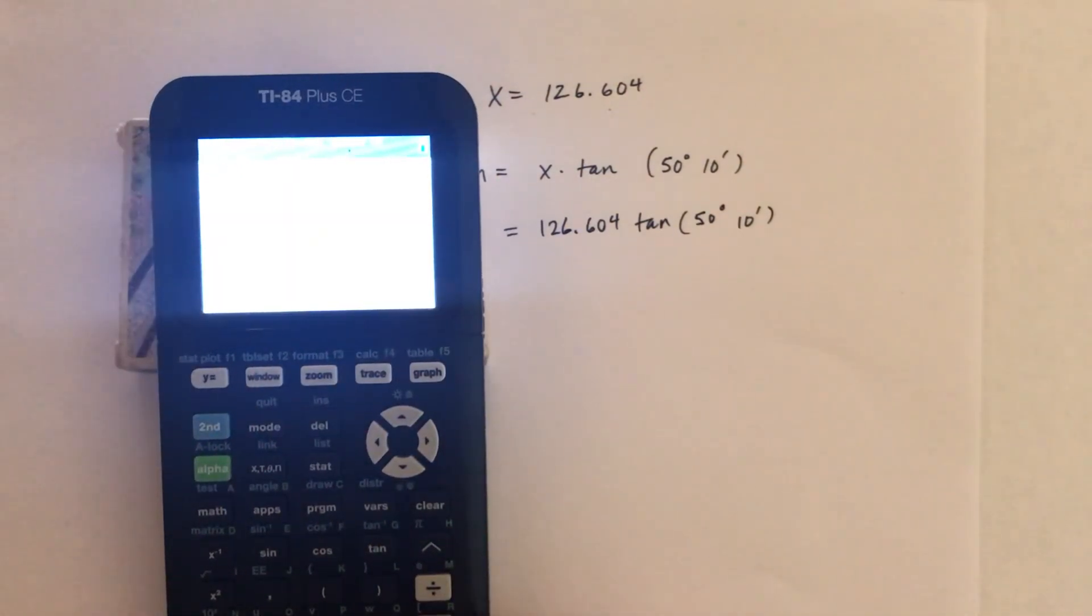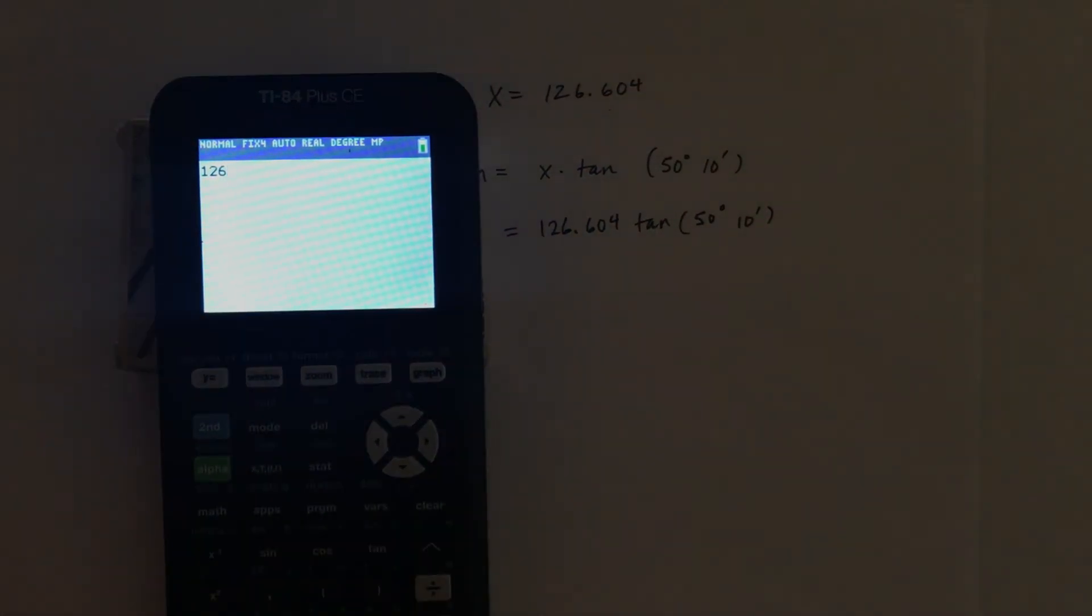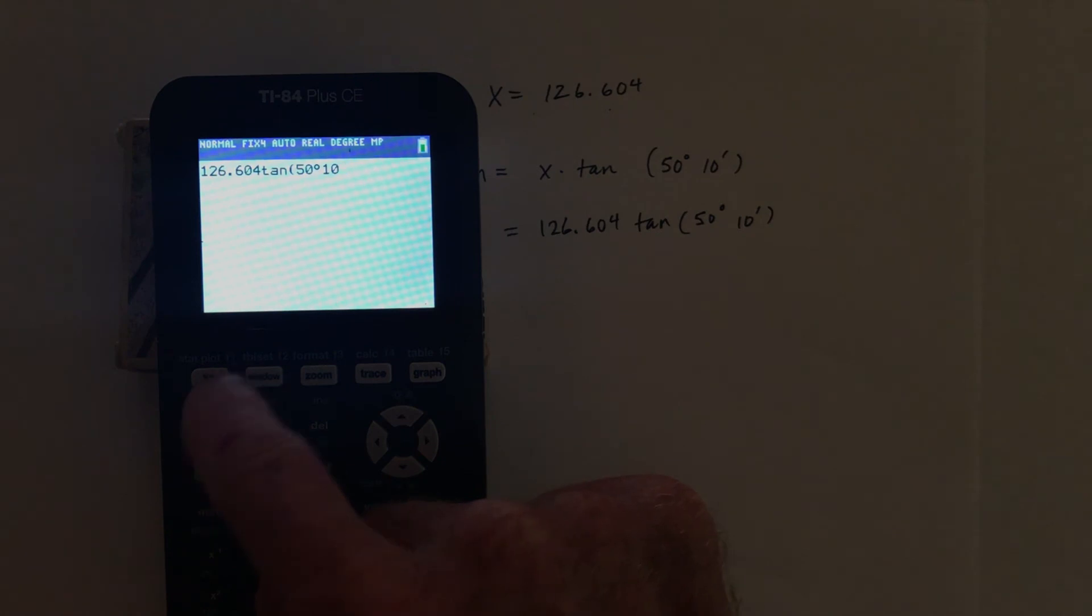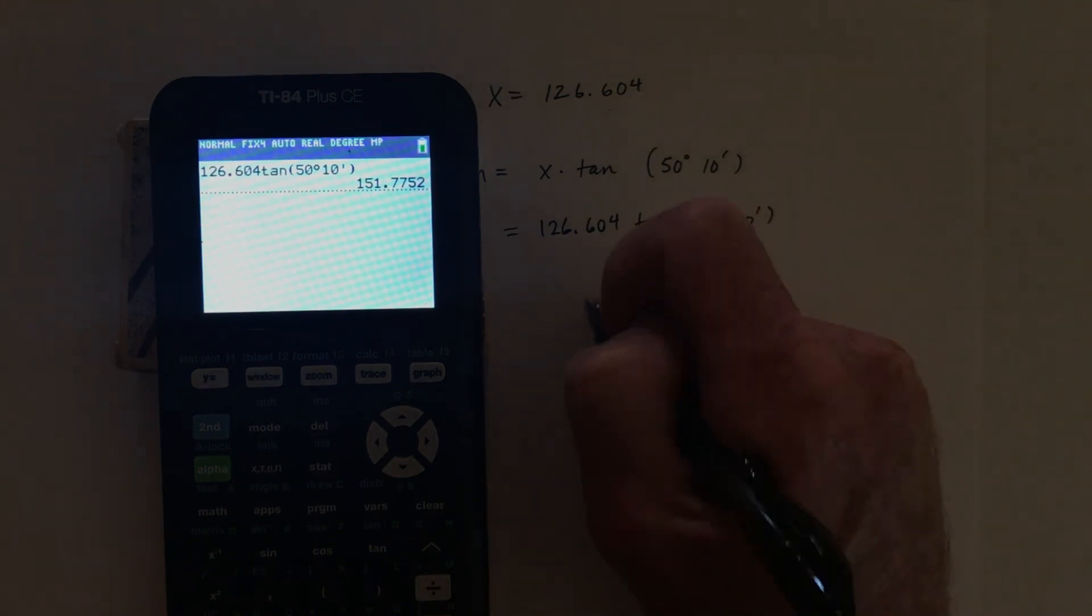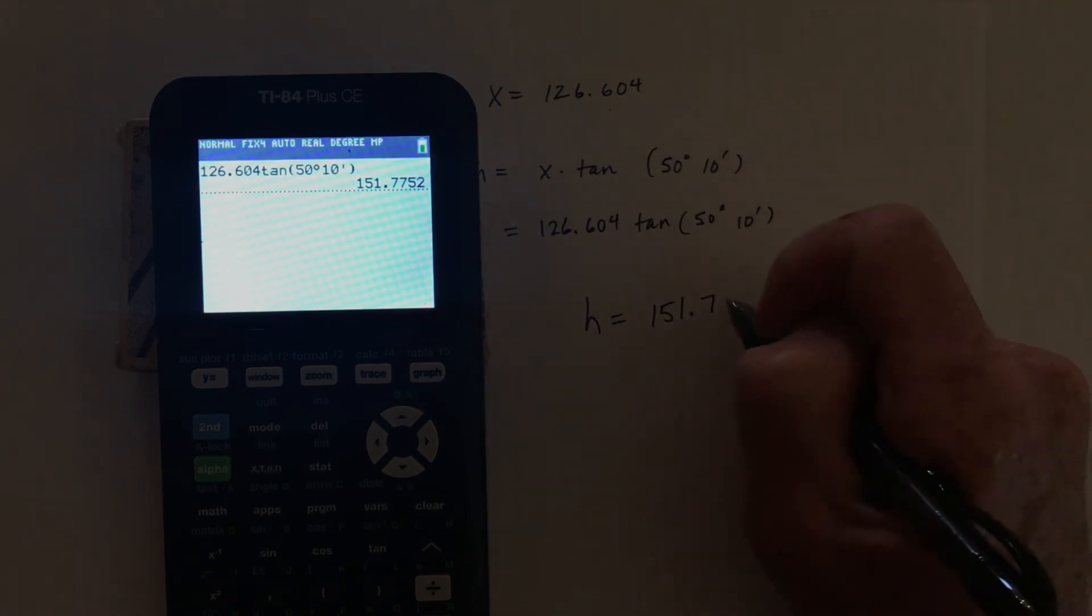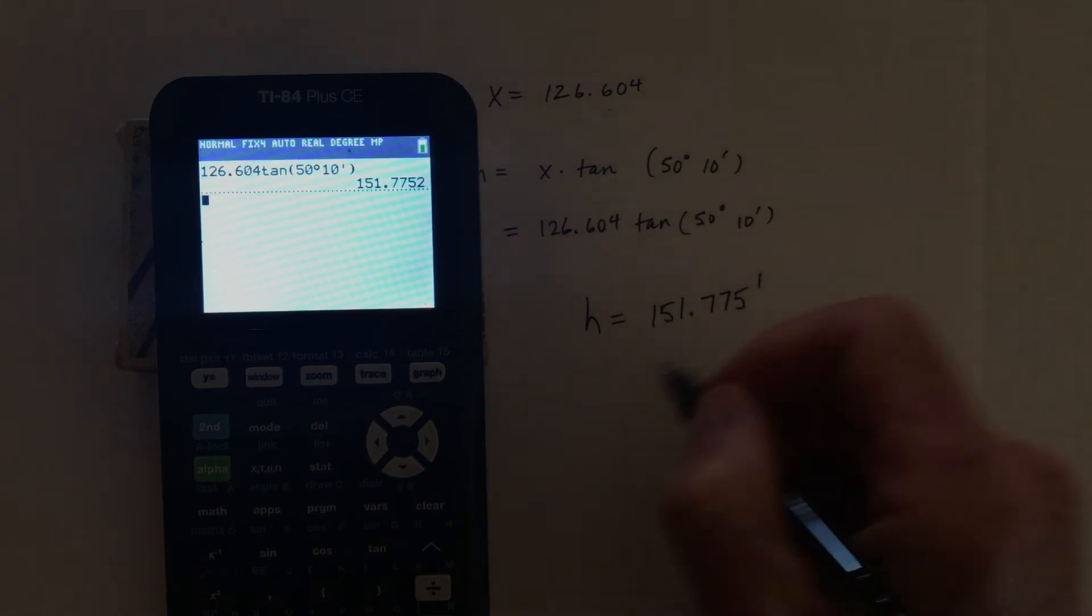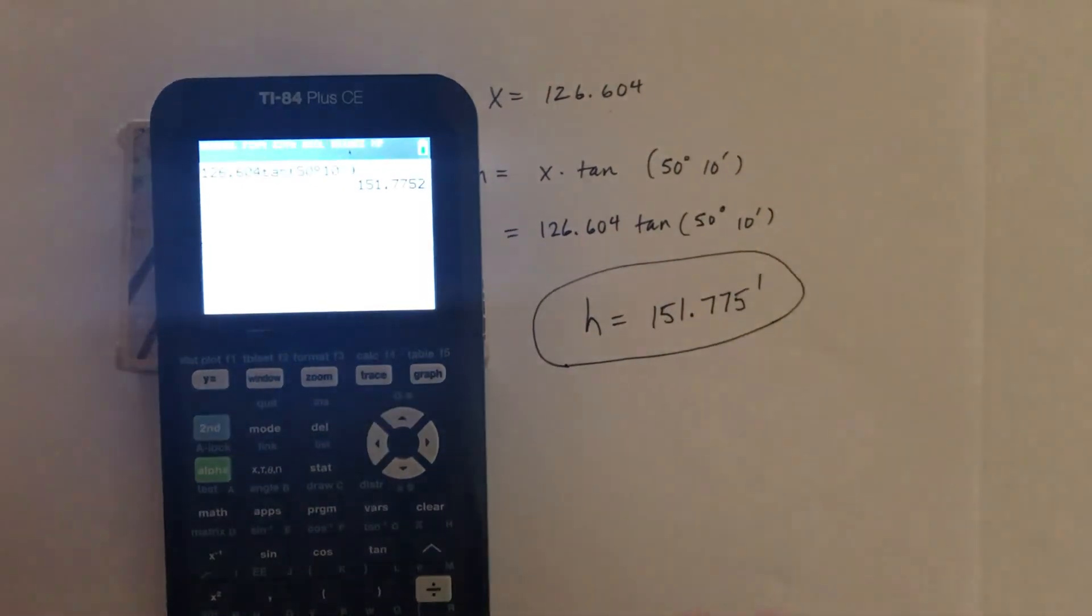So 126, oh, hold on. Okay, well, you can see the calculator now. 0.604 and then tangent of 50 second angle degrees, 10 second angle minutes. So the height is actually h equals 151.7, and I'm going to go to three decimals, so 775 feet. That is my final answer.